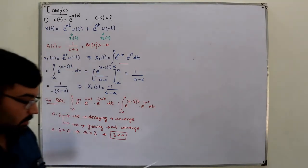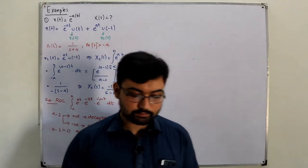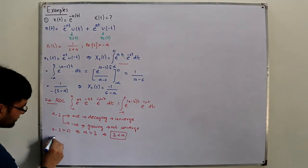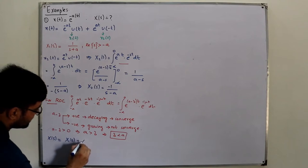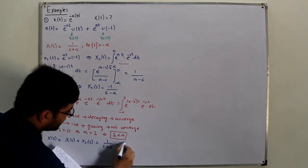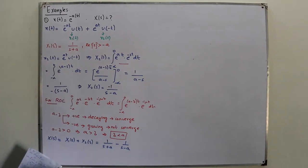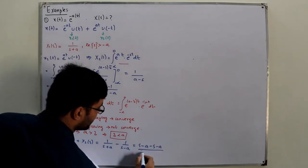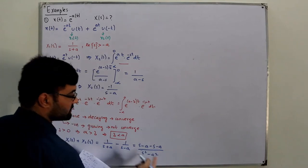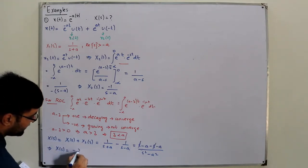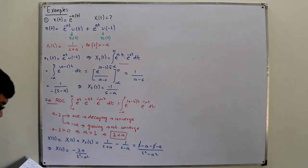The overall Laplace transform X(s) = X₁(s) + X₂(s) = 1/(s+a) - 1/(s-a). Combining over a common denominator (s+a)(s-a) = s²-a²: the numerator is (s-a) - (s+a) = -2a. So X(s) = -2a/(s²-a²).